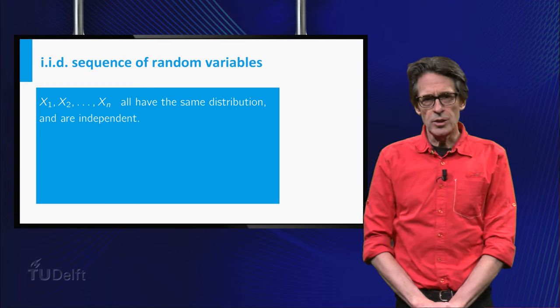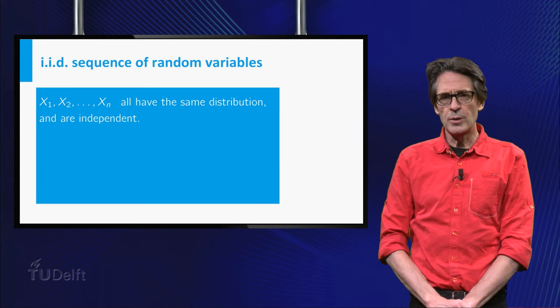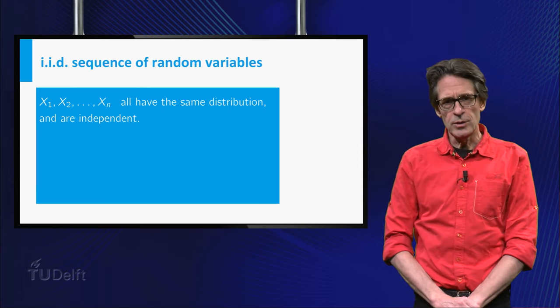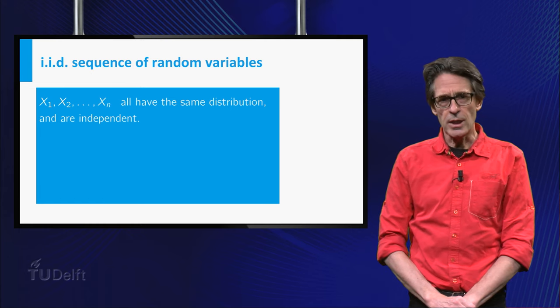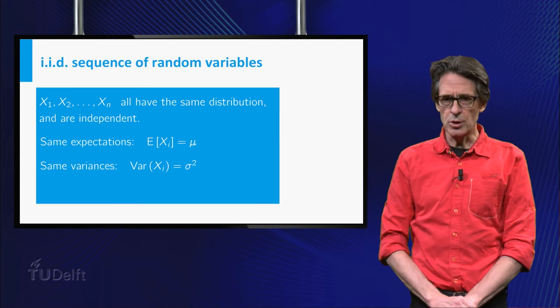Throughout the video I will consider a sequence x₁ up to xₙ of independent random variables with the same distribution. Assuming the expectations and the variances of the xᵢ exist, they will of course be equal and I will denote them by μ and σ².